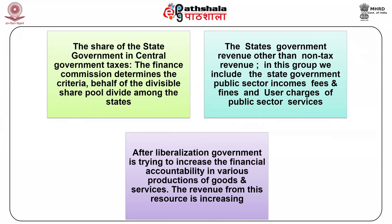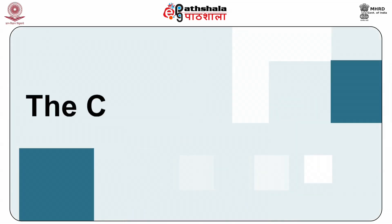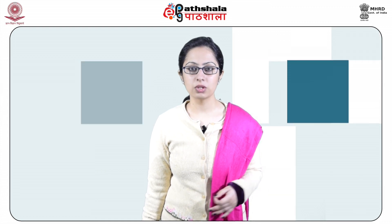Regarding the share of state government in central government taxes, the Finance Commission determines the criteria for the divisible pool to be shared among states. Non-tax revenue of state governments includes public sector income, fees and fines, and user charges of public sector services. After liberalization, government is trying to increase financial accountability in various production of goods and services, and revenue from this resource is increasing. The Finance Commission and earlier Planning Commission transfer grants and loans to state governments. The state government can also take loans from internal sources — borrowings from market, small savings, and provident fund receipts are the main sources.